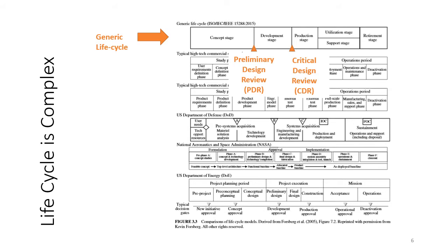All of these processes can be summarized by the generic life cycle process as defined by ISO and IEEE, which has six stages. The first stage is the concept stage, where the system is conceived and initially scoped out. The second stage is development, followed by the production stage where the system is built and manufactured, then utilization supported by the support stage, and finally the system goes into a retirement stage. The six stages are: concept, development, production, utilization, support, and retirement. System engineers are responsible for managing this complete life cycle.